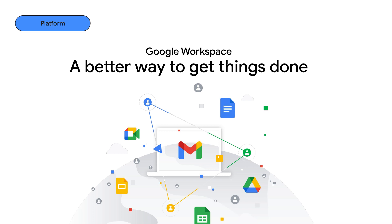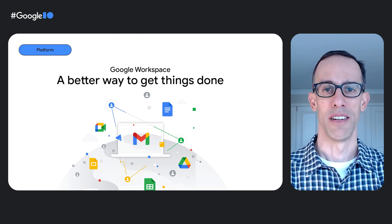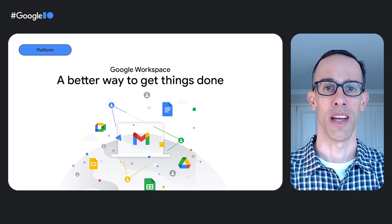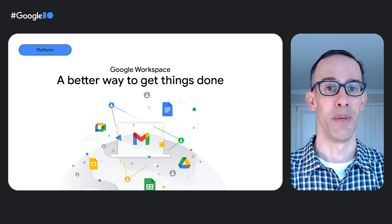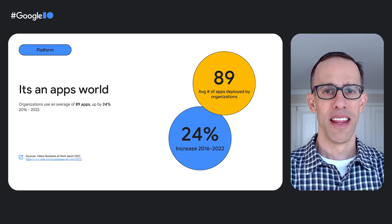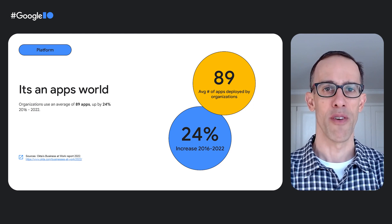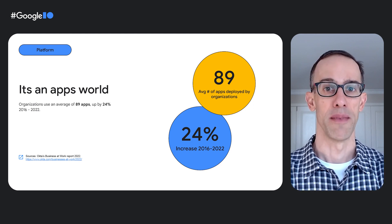We're focused on addressing the challenges facing our users — businesses and organizations around the world, and billions of consumer users. Shifts to hybrid work have altered businesses. Collaboration and processes have moved to the cloud. Workspace is critical to help millions of businesses get work done in this new way of working. The average number of apps deployed across organizations has risen steadily for an average total of 89 apps, representing growth of 24% since 2016, according to Okta's Business at Work report.